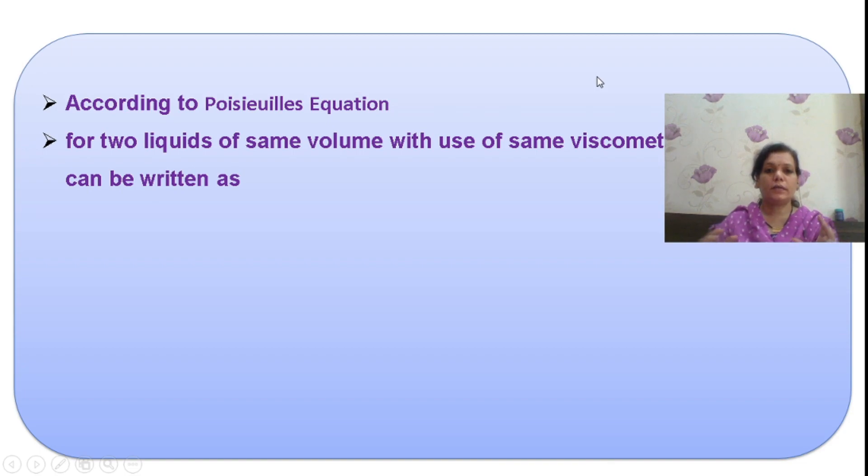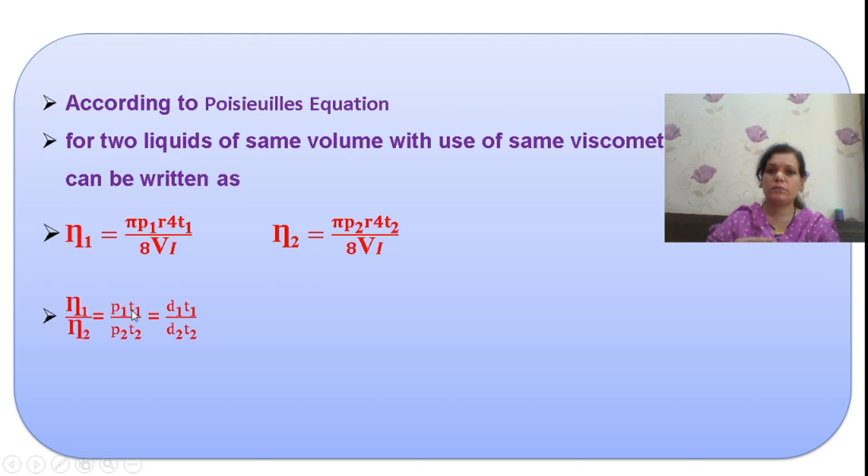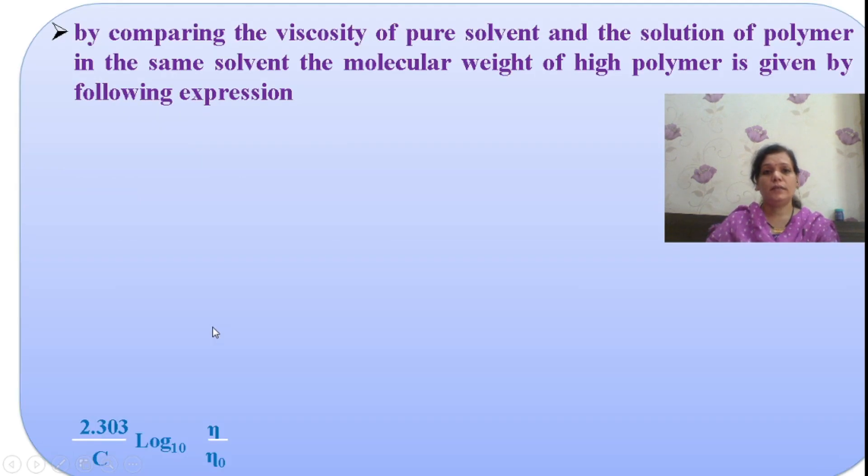For two liquids of same volume and same viscometer, if we compare, the ratio of this equation shows variation with respect to pressure and temperature when comparing two liquids under similar conditions. We can write this equation in terms of d₁/t₁ divided by d₂/t₂, as pressure is directly proportional to the density of a liquid.